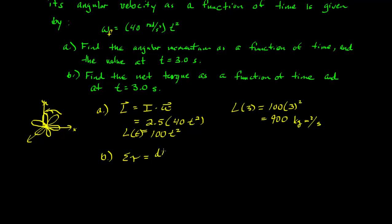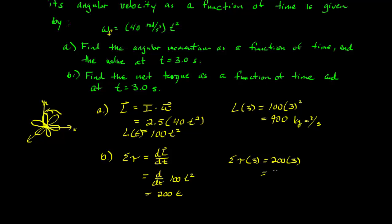For part B, we want the net torque using Newton's second law for angular momentum: net torque equals the derivative of L with respect to time. The derivative of 100 t squared is 200 t. At t equals 3 seconds, net torque equals 200 times 3 equals 600 Newton meters. Just a little calculus, not too heavy — just using the equations.